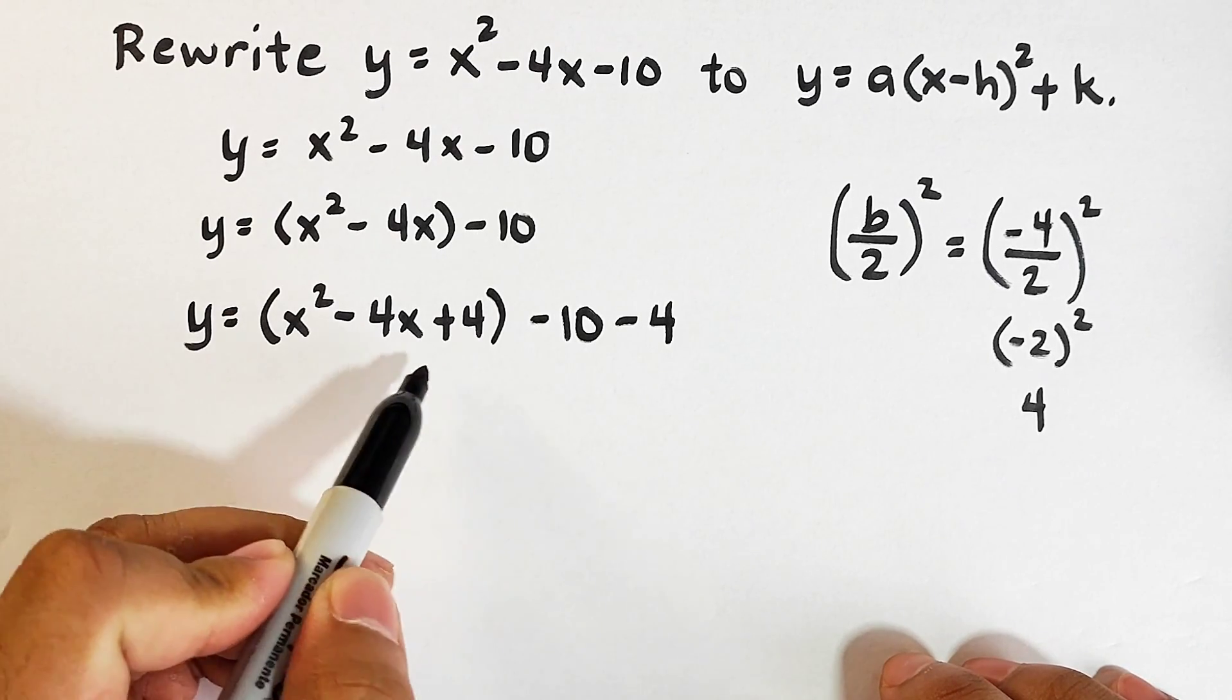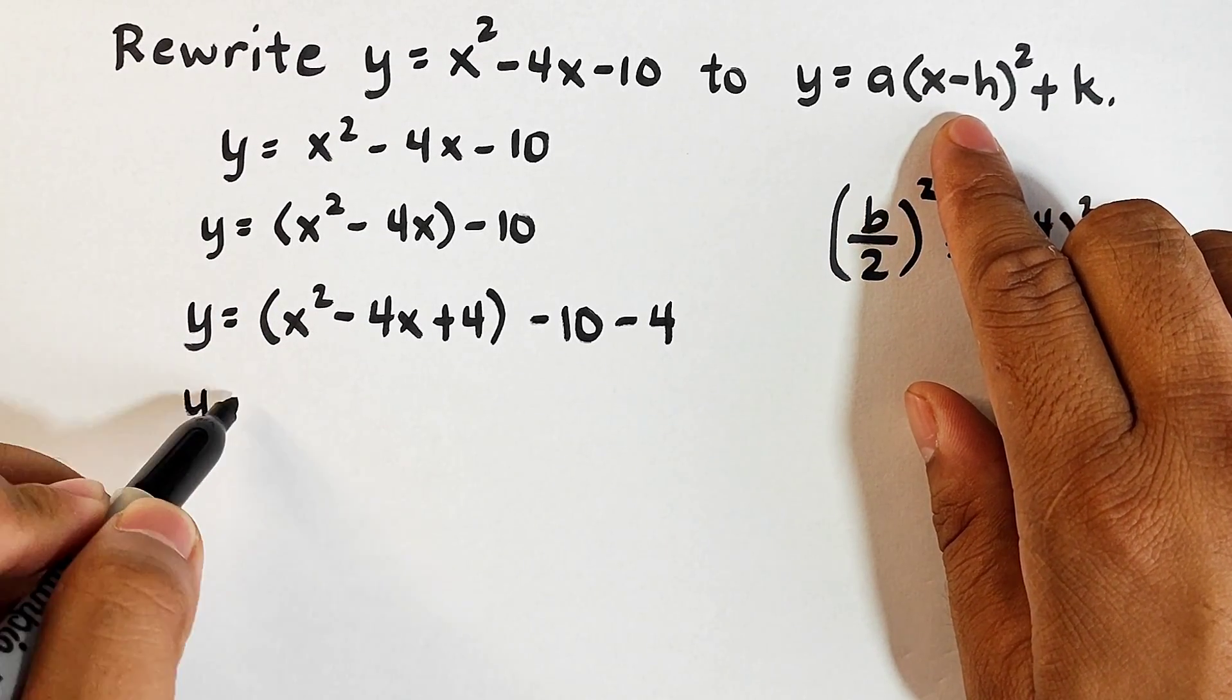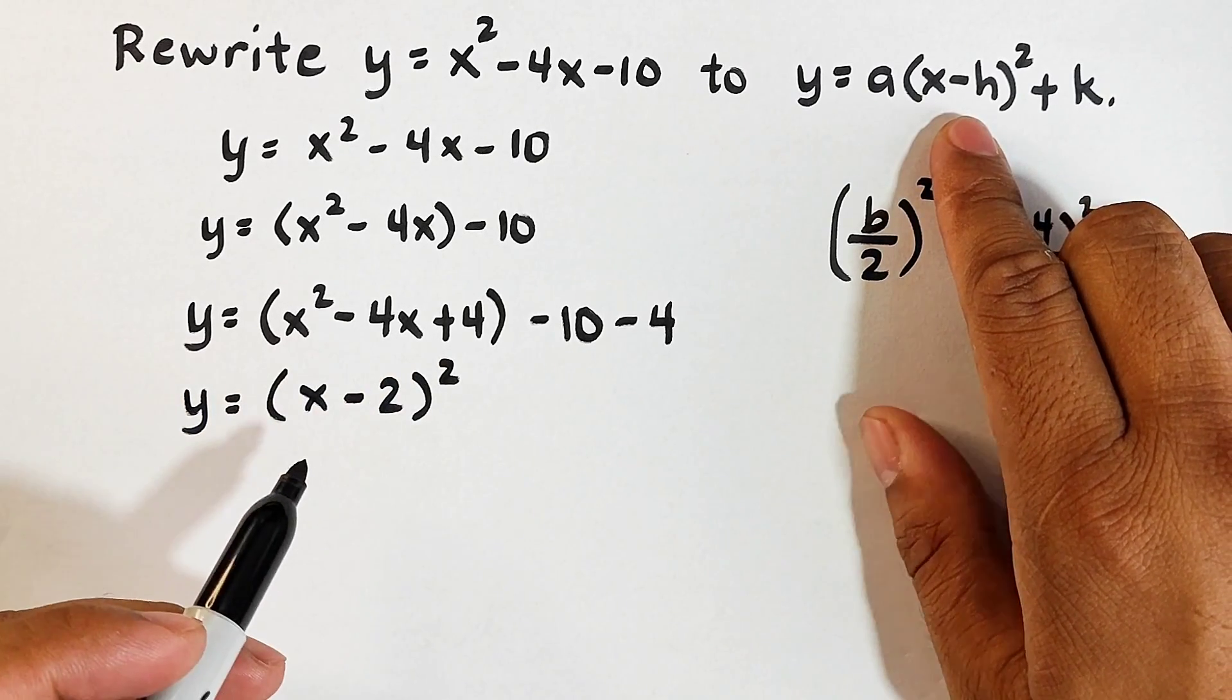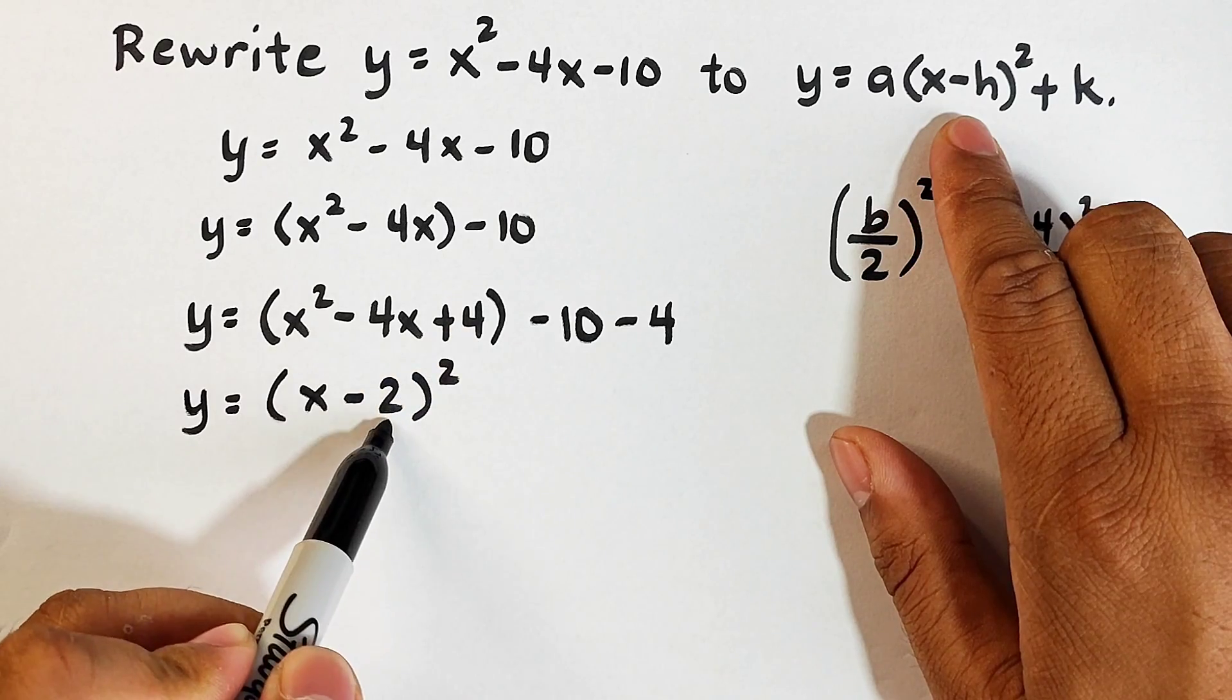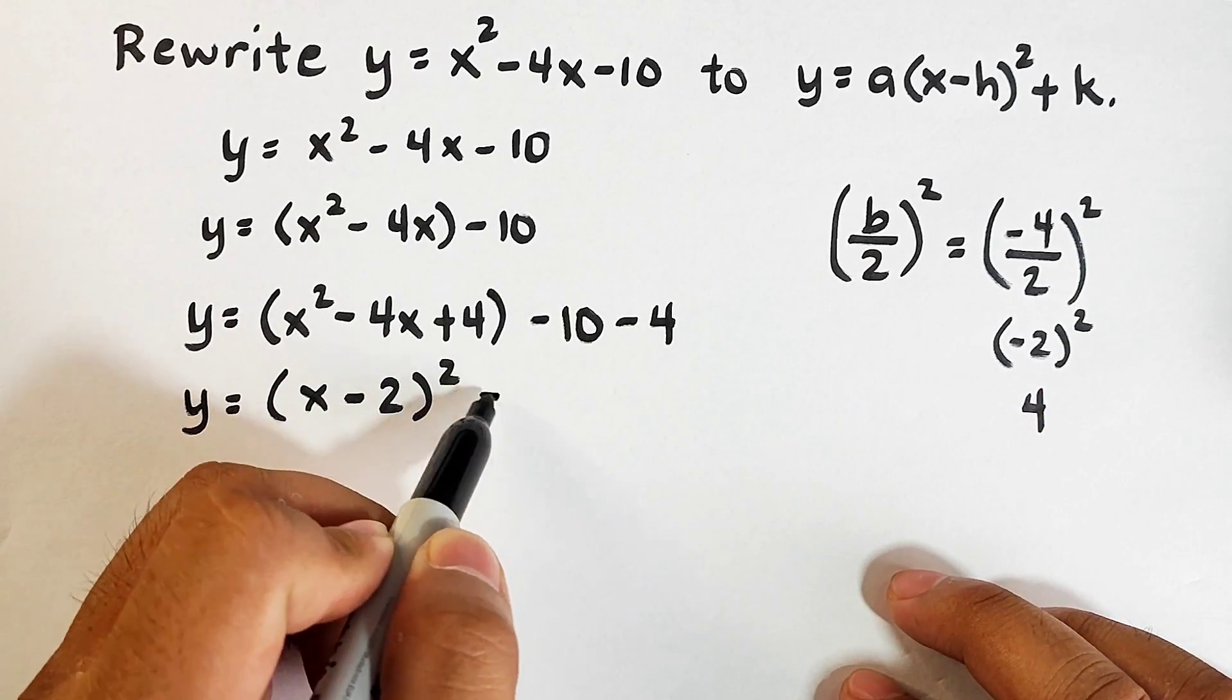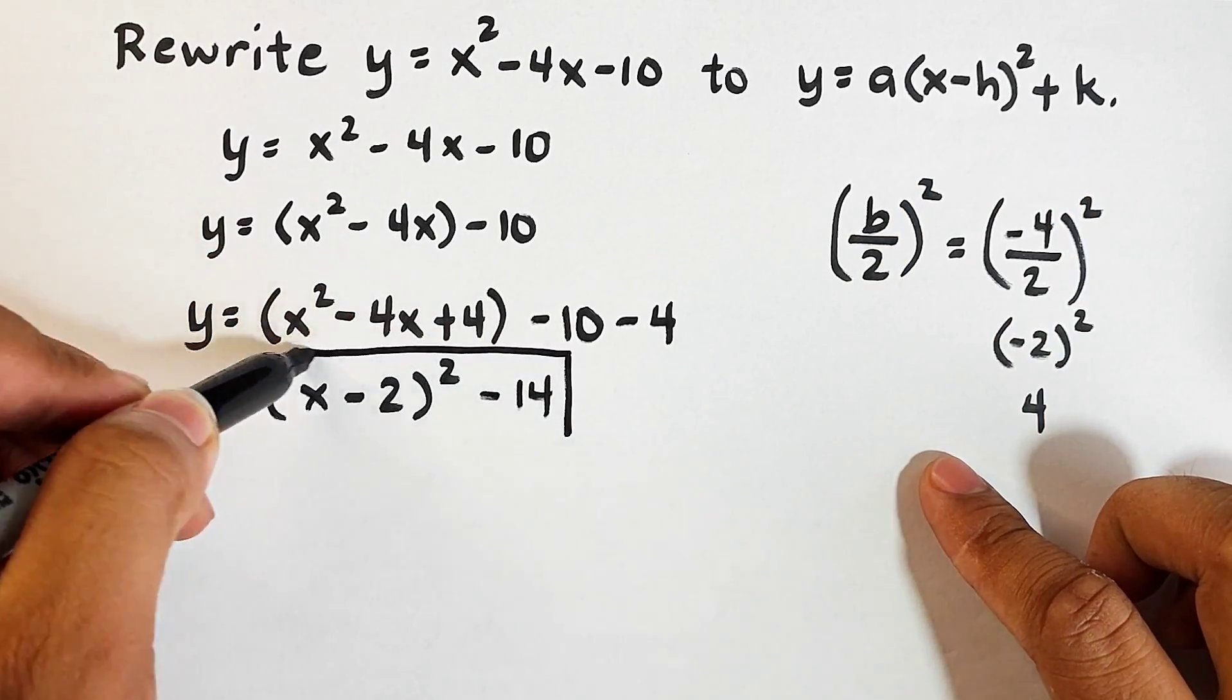Okay, so continue natin. Since we already have this trinomial, or perfect square trinomial, we can express this like this one. So you have y equals square of binomial, that is x minus 2 squared. Paano natin nakuha yan? Get the square root of this. That is x. The square root of 4 is 2. Copy the middle sign. Ito yan. Put your exponent here. Then simplify this. Negative 10 minus 4 is negative 14. And as you can see, they look like the same. Ito yung mismong ating sagot.